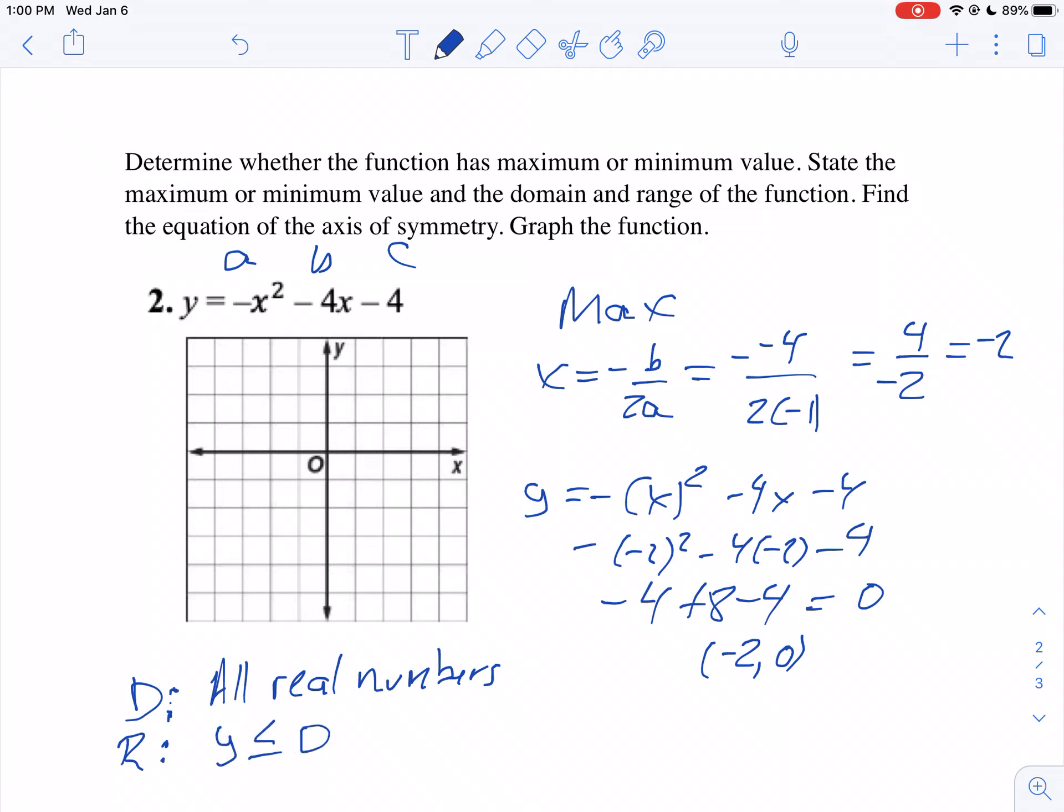And then finally, I'm supposed to graph the function. When we know your vertex is at negative 2 and 0, it's a sad parabola. Well, notice the number in front of x squared is 1, so when I go over 1 in either direction, I'm going to go down 1. You could make a table like we did in the first one, but if I go over 2 from my vertex, I'm going to go down 4 from my vertex. So 1, 2, 3, 4. And then there is our parabola.